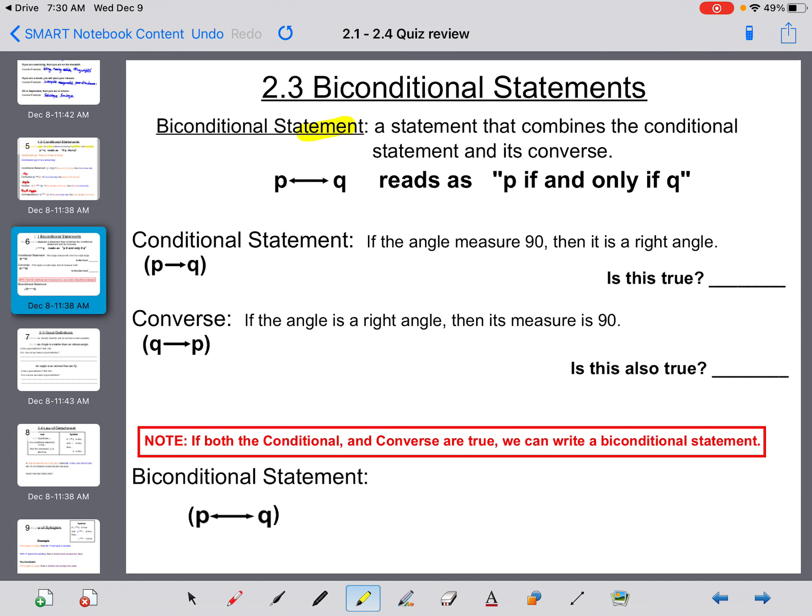Biconditional statements. A biconditional statement is a statement that combines the conditional statement and its converse. Both need to be true. Biconditional statements have an arrow going in both directions, from P to Q, and that reads P if and only if Q. So here's your conditional: if the angle measures 90 degrees, then it is a right angle. Is it true? Yes, that is true. The converse of the conditional is: if the angle is a right angle, then its measure is 90. That is also true. Since both statements, your conditional and your converse, are true, you can write a biconditional statement.